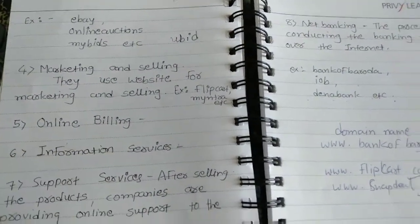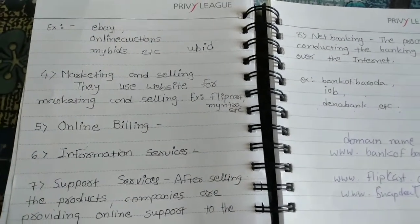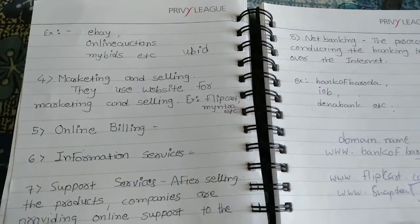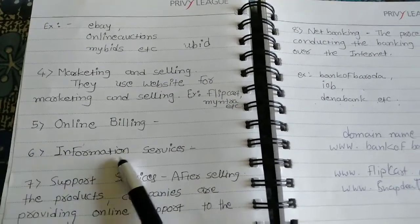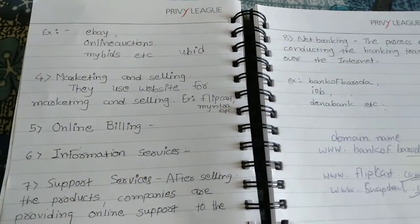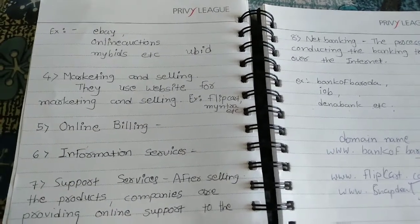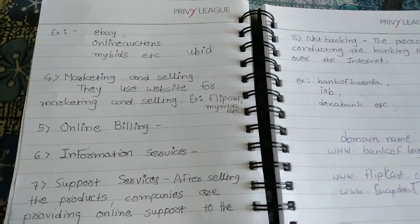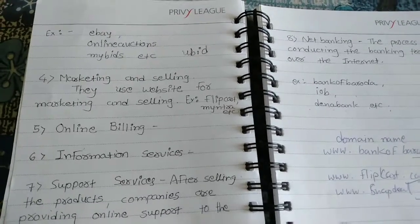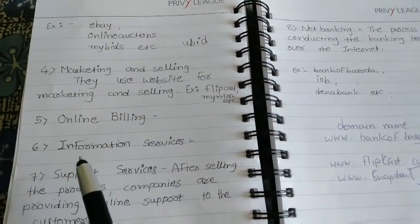The fifth application is online billing. If you want to pay any bill online, then you can pay it by using online billing. The sixth application is information service — if you want to get some information through a website on the internet, for example students wanting to know the exam timetable or enrollment form, then they can get that information by using the internet.